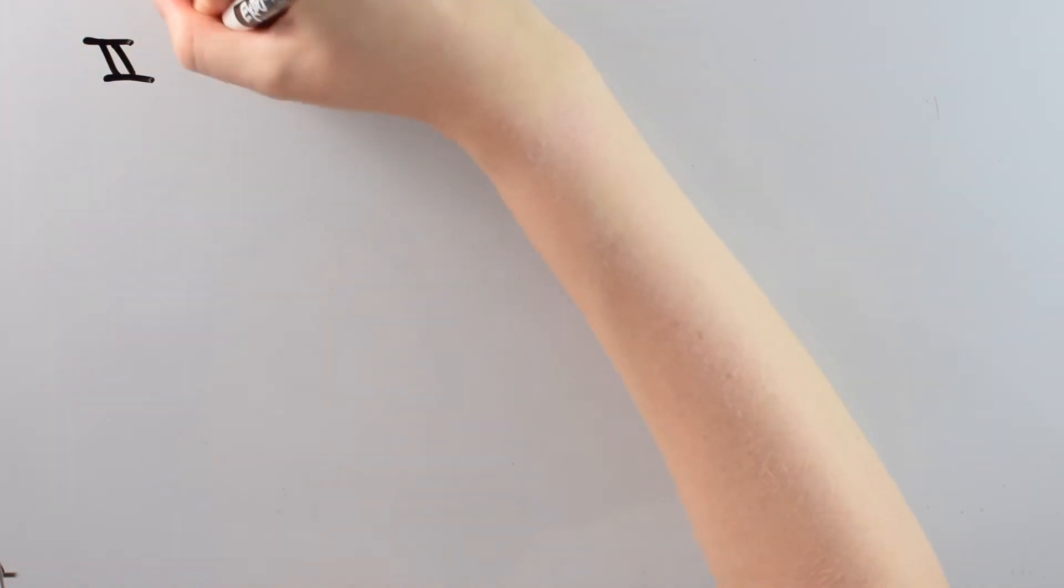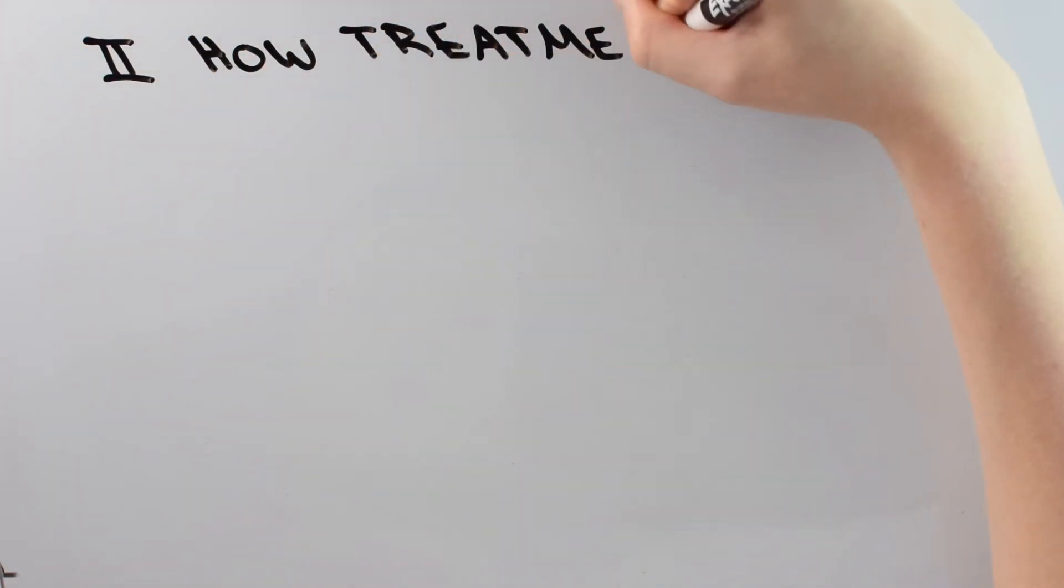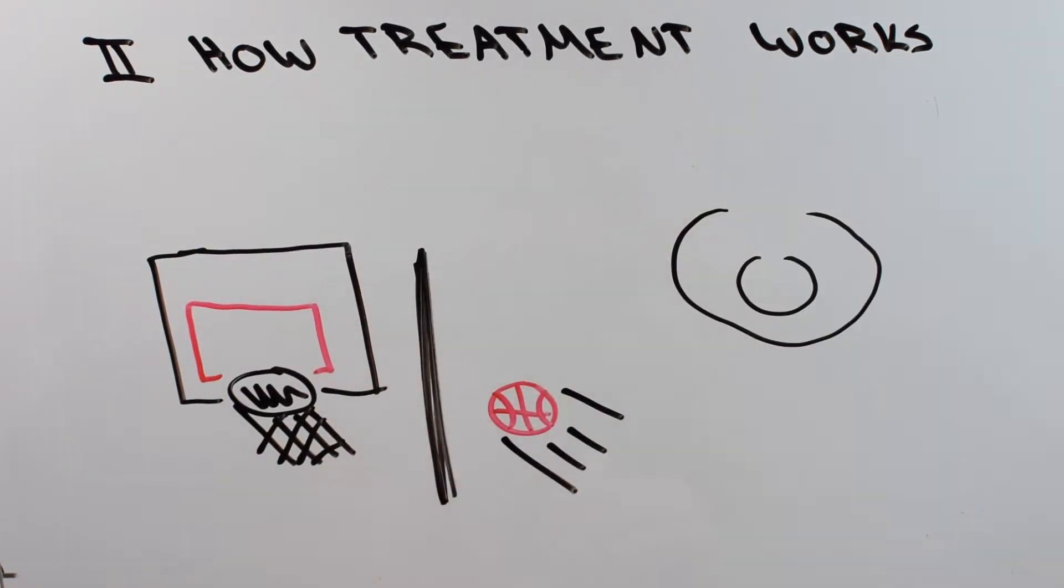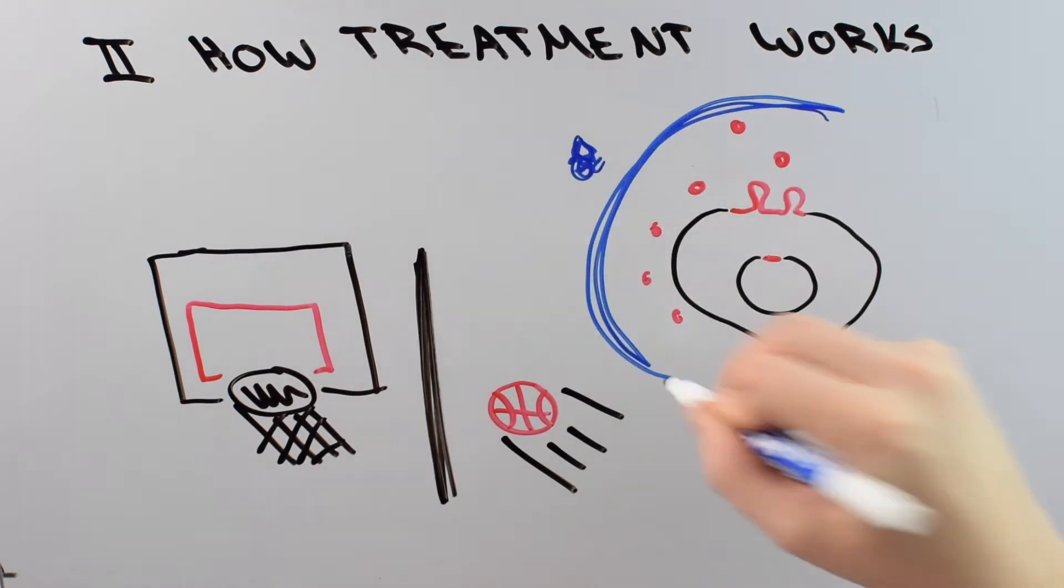So now that we know how HIV works, let's move on to how our current treatment works. Treatment is done through inhibitors. And inhibitors work kind of like blocking a shot in basketball. Except in this case, the inhibitors block HIV. They can either block HIV while it's being produced, or block HIV from being able to infect new cells.